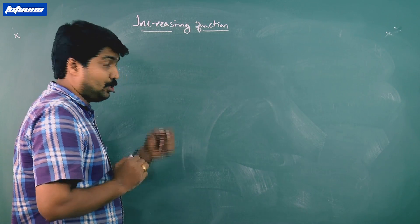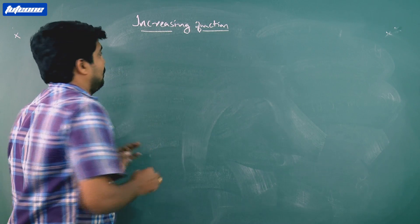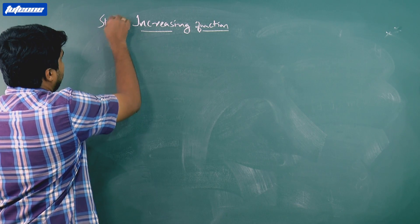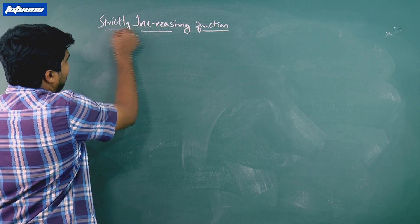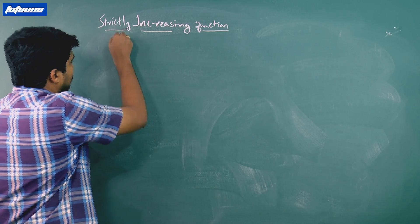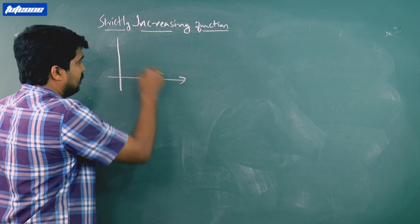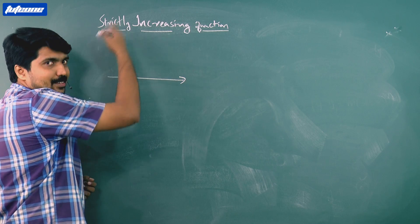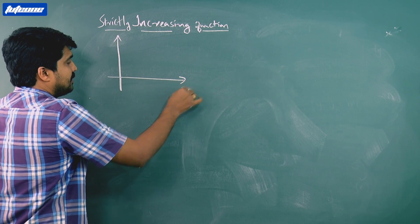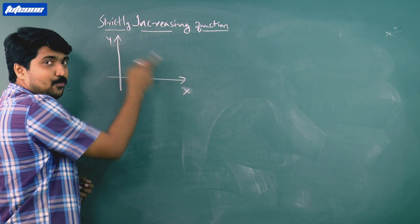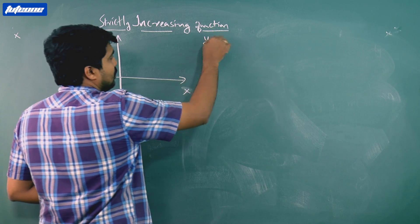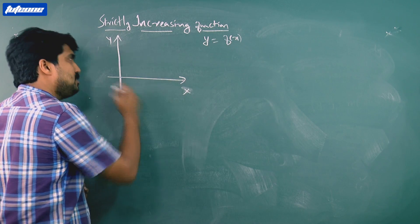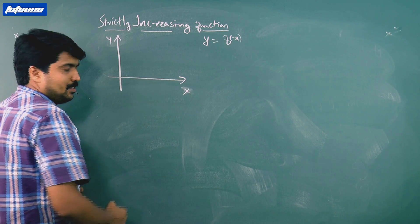For a strictly increasing function, when x increases, y increases. So x and y — y is a function of x. For a function y = f(x), when x increases, y also increases.